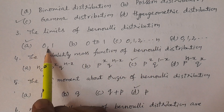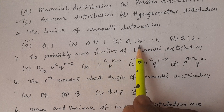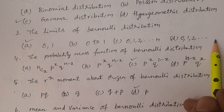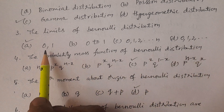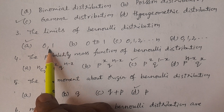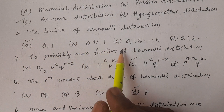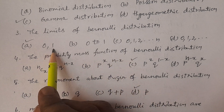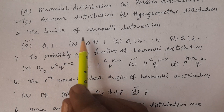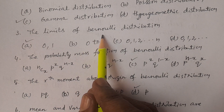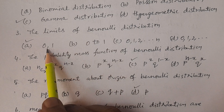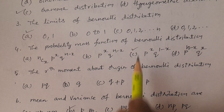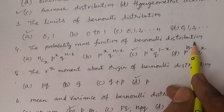The Bernoulli variate takes only two values: 0 and 1. Therefore the answer is option A, zero comma one. These are the limits of Bernoulli distribution — it takes only two values, 0 and 1.